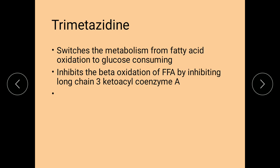Trimetazidine: normally, cardiac myocytes derive their energy from beta-oxidation of fatty acids as well as glucose metabolism, but beta-oxidation is the one which consumes more energy. Therefore, this drug stops the beta-oxidation of fatty acids and makes the myocytes use glucose as a source of energy, as energy consumption during glucose metabolism is far less compared to beta-oxidation. Trimetazidine acts by inhibiting the enzyme long-chain 3-ketoacyl coenzyme A.